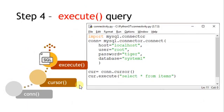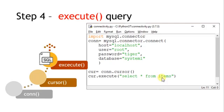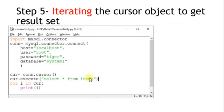Now that the cursor object is ready, it's time to execute the query. We use cursor.execute() and provide the respective query. In this case, to extract all records from the table 'items', the query is: SELECT * FROM items. Once executed, all the records are brought into the cursor object — technically we call this set of records a record set.